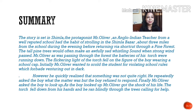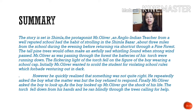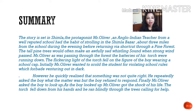The flickering light of the torch fell on the figure of a boy wearing a school cap. Initially, Mr. Oliver wanted to scold the student for violating school rules which forbid venturing out in the dark. He mistook him to be a real student and was about to identify and scold him, as it was against school rules for children to roam around in the dark.